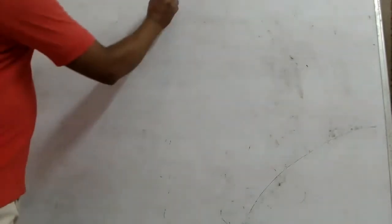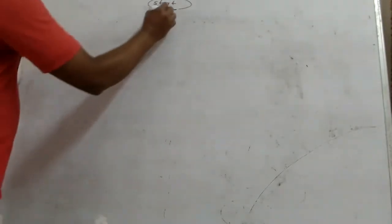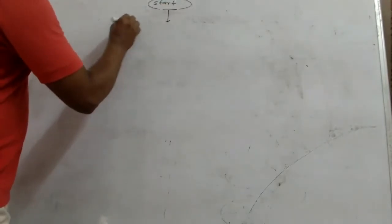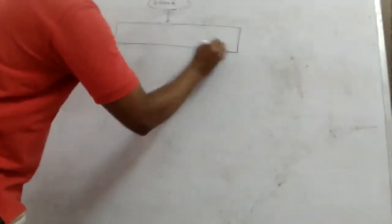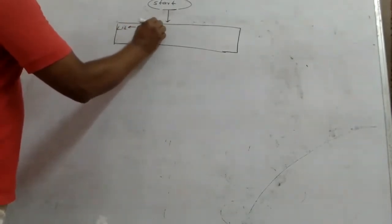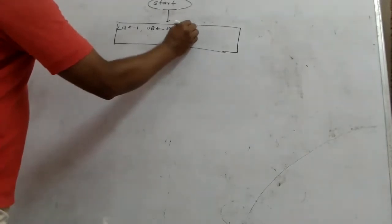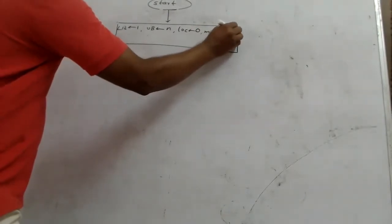Making a flowchart for binary search algorithm. First step, always start with oval representation. Next, initialization step: LB initialized with 1, UB initialized with N, LOC initialized with 0, and mid initialized with lower bound plus upper bound divided by 2.